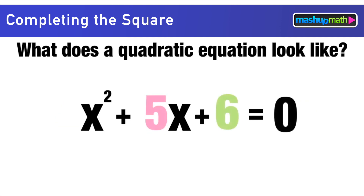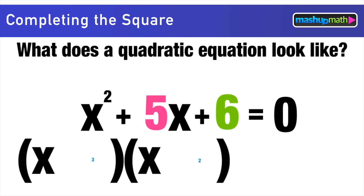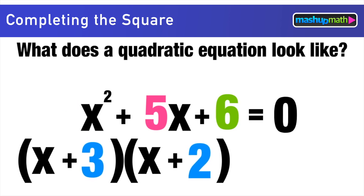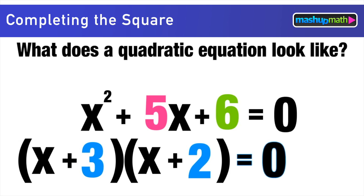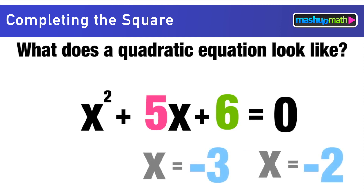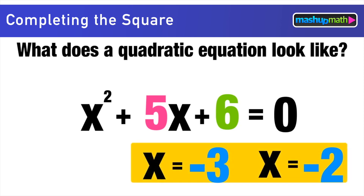Let's say we have the example x² + 5x + 6. There's really a 1 in front of the x² term, but we don't need to write it. To factor this, we find two numbers that add to positive 5 and multiply to 6 — that would be (x+3)(x+2). Set equal to zero, we find x = -3 and x = -2.